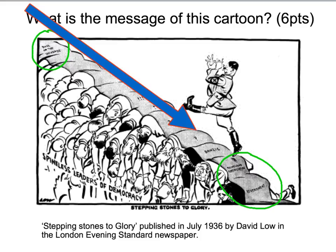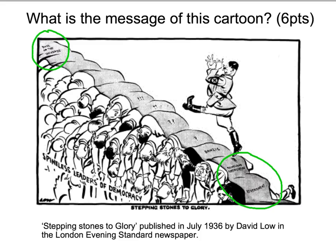When you look at the piles of bodies at the bottom, these could be the leaders of democratic countries like Britain and France — they appear alive at this point, whereas further along the path they could be shown as dead. Alternatively, these bodies could represent casualties of war: as Hitler progresses on his increasingly aggressive path and takes over more and more countries, people will die.